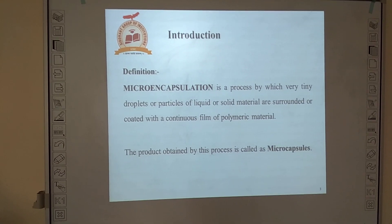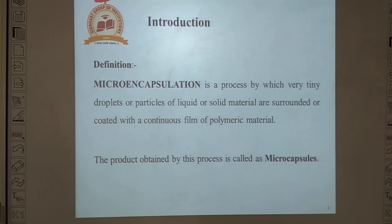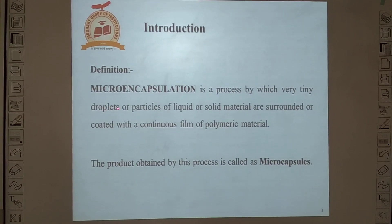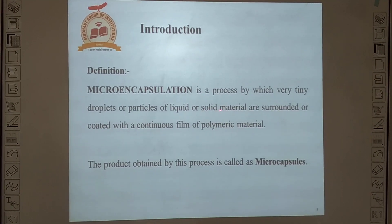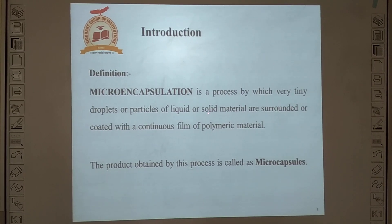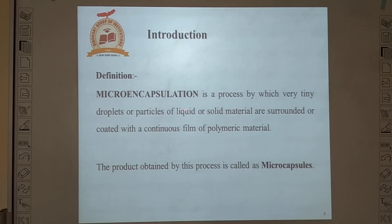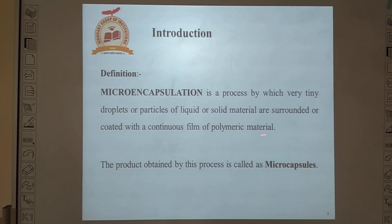Microencapsulation — the name indicates that we are encapsulating something, meaning we have to encapsulate our drug with some material. The definition of microencapsulation is: liquid or solid material are surrounded or coated with a continuous film of polymeric material. It is a process by which very tiny droplets or particles of liquid or solid drug are surrounded or coated with a continuous film of polymeric material.